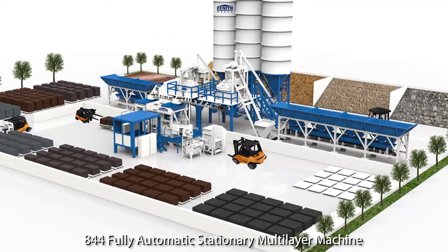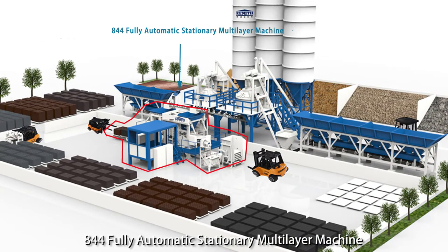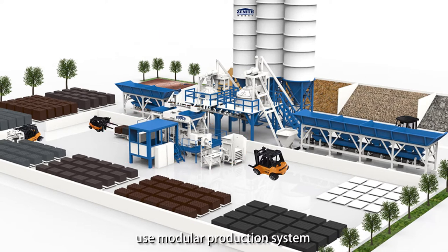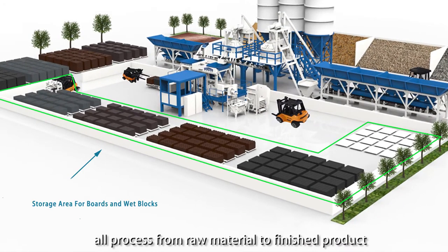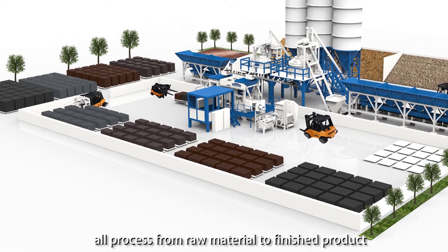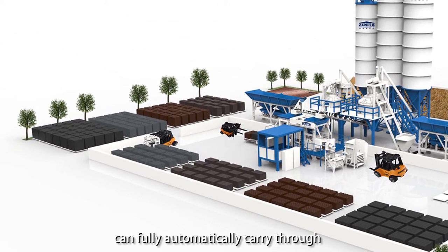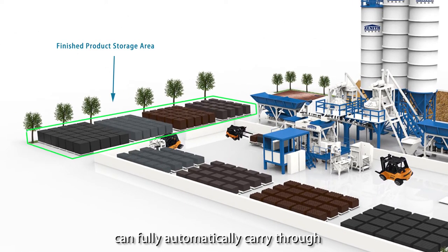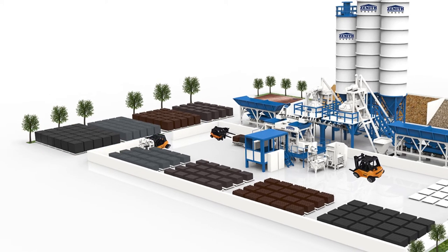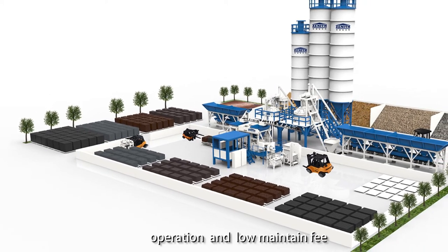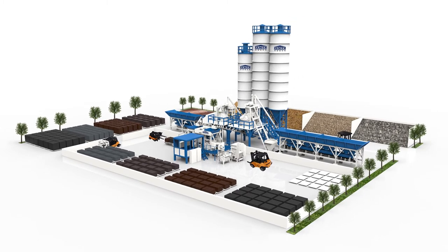The 844 Foley Automatic Stationary Multi-Layer Machine uses a Modular Production System. All processes from raw material to finished product can be fully automatically carried through. Its features include stable performance, easy operation, and low maintenance.